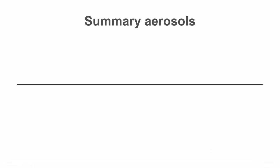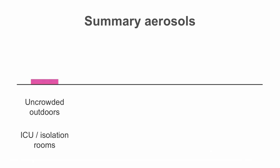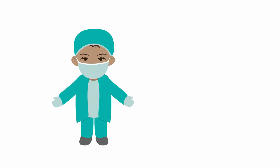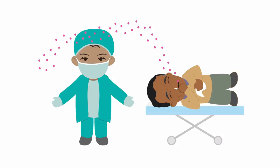In summary, when it comes to viral load in the air, the data suggests that the concentration of suspended virus increases from almost no virus in uncrowded public places, ICUs, and isolation rooms, to a little more in crowded outdoor areas, even more in medical staff rooms and patient toilets, to a lot in staff changing rooms where they take off their protective apparel. In general, the concentration of virus in the air inside hospitals seems to be low, but may be significantly elevated when staff have spent long hours caring for patients, with aerosol and droplets deposited on their protective gear.